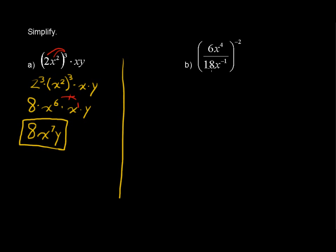And first, 6 over 18. Well, we can simplify that. 6 over 18 is 1 over 3. We can divide out a 6 out of both the numerator and the denominator.